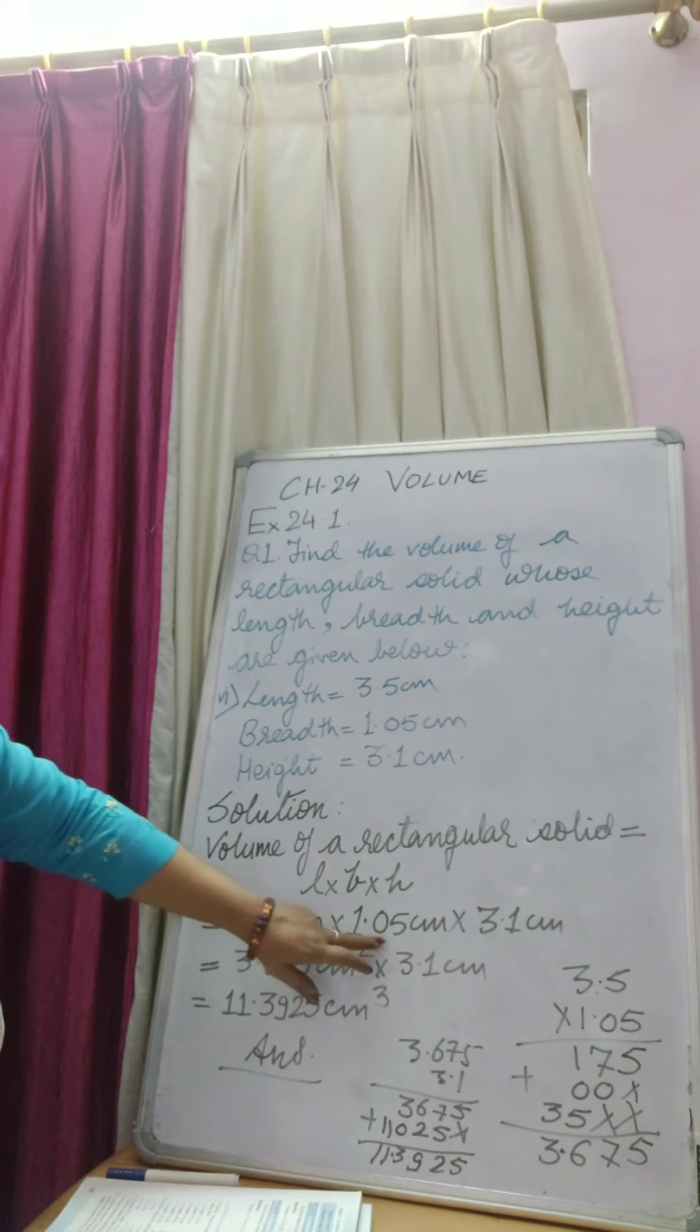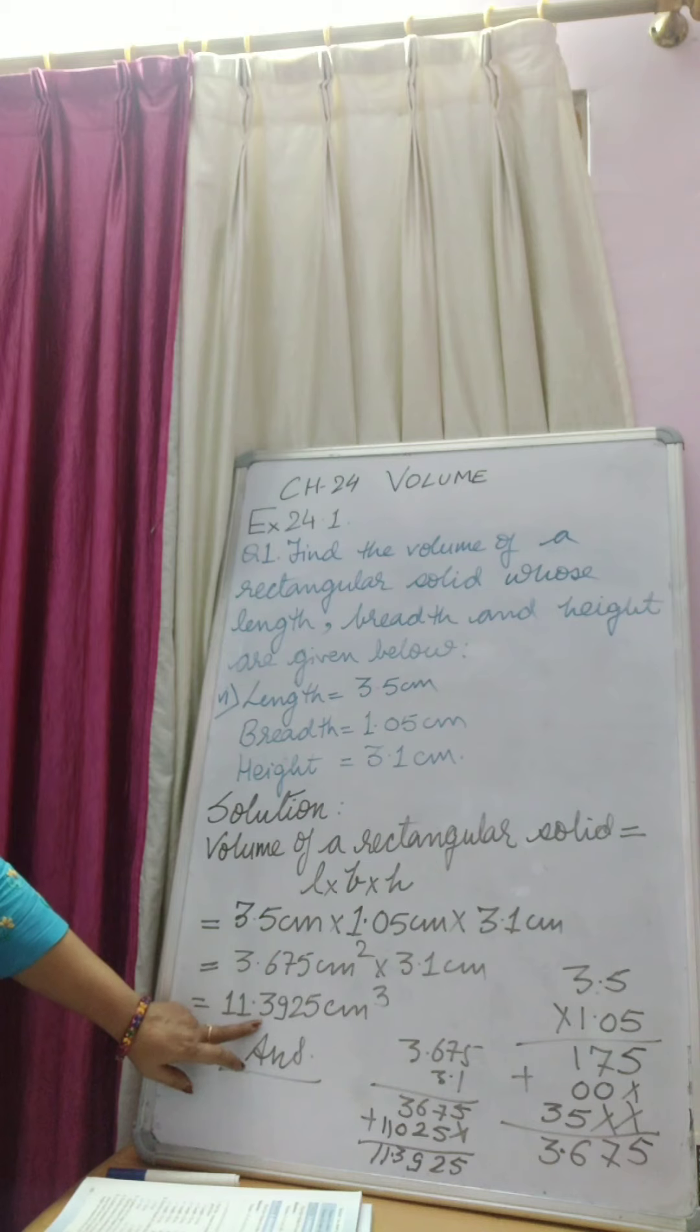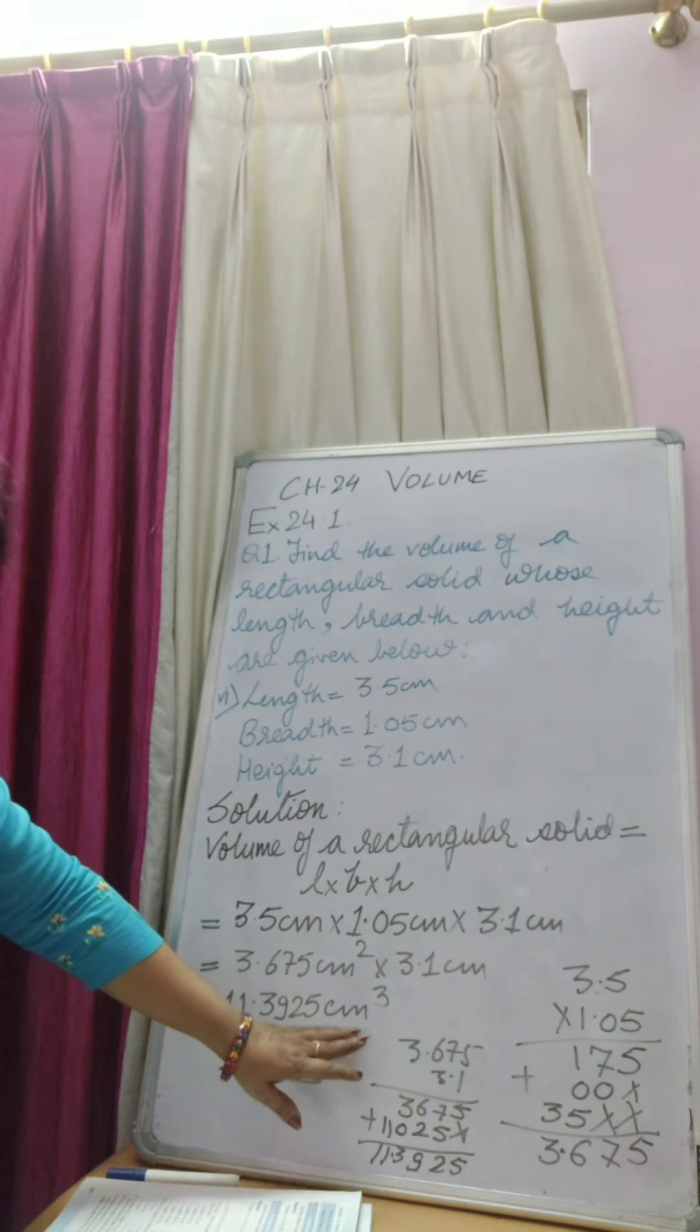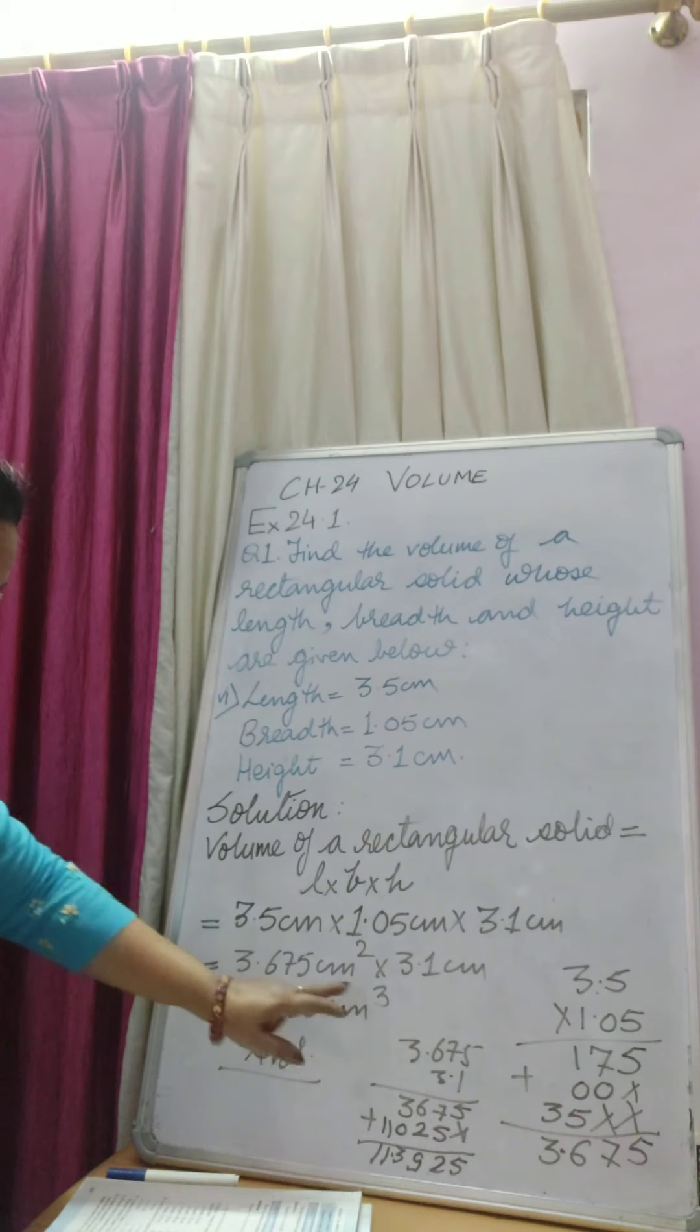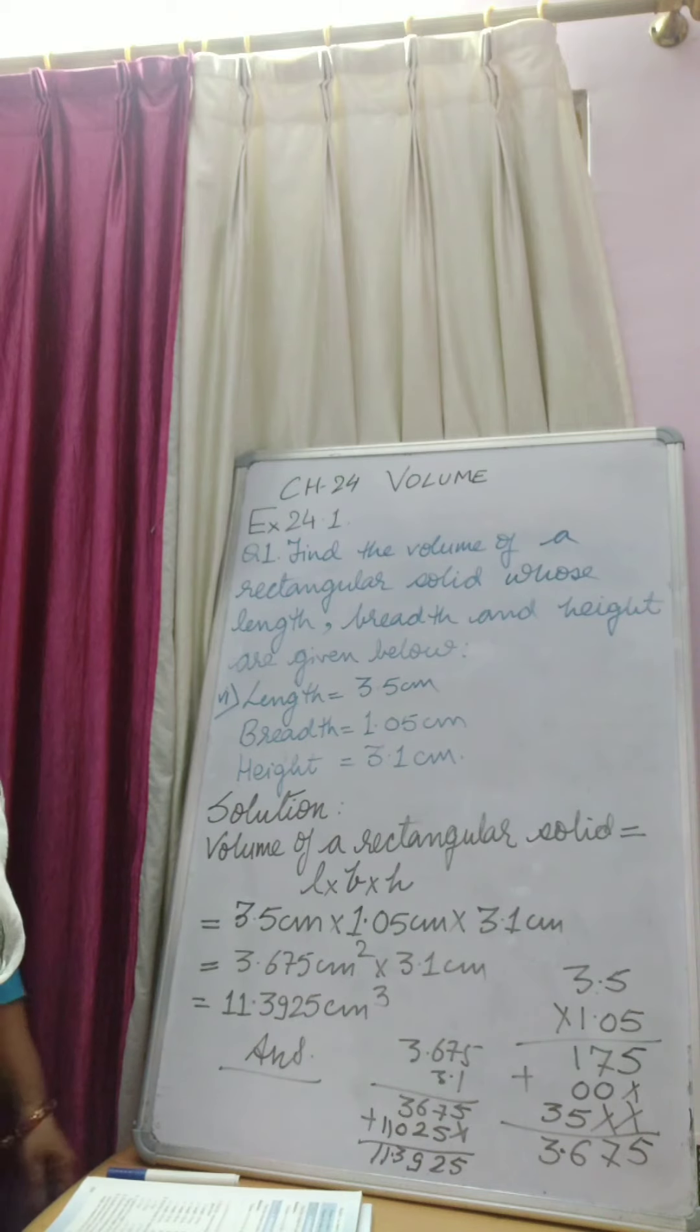Make sure that decimals you count. See 1, 2, 3, 4 decimal places. So 1, 2, 3, 4 decimal places. And cm cube. Make sure that you are writing unit of volume in cube. Here it is cm into cm into cm, so it is cm cube. Thank you children.